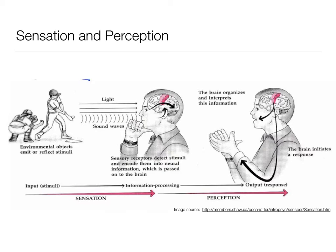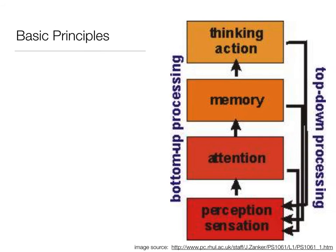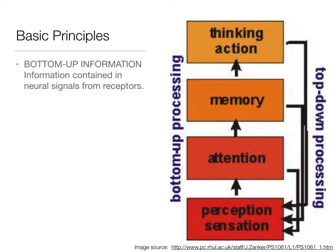Sensation is going to be the stuff in our world that can create this experience, and perception is going to be what we think that experience is - our interpretation of it. Sensation happens first, and then our brain organizes and interprets it. That's called bottom-up processing - the sensation happens, and then we have perception, which in turn affects our attention, memory, thinking, and action.